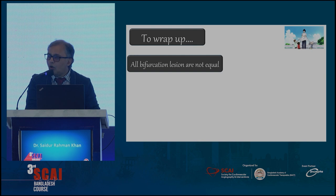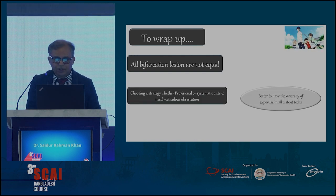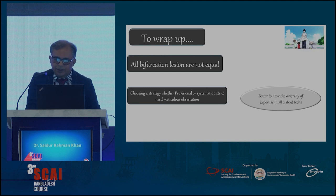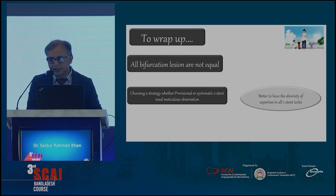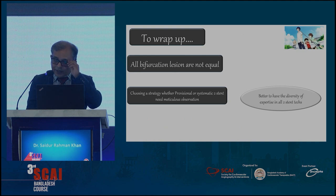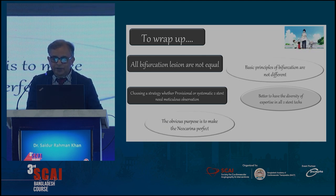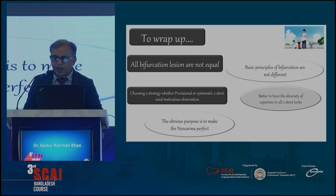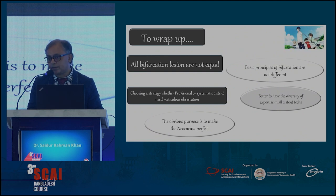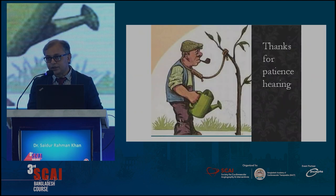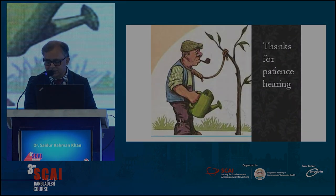To wrap up: all bifurcation lesions are not equal. Choosing a strategy — whether provisional or systematic two-stent — needs meticulous observation. It is better to have diversity of expertise across all two-stent techniques. The obvious purpose is to make the neo-carina perfect, and the basic principles of bifurcations are actually not that different from each other. Thank you very much for your patience.